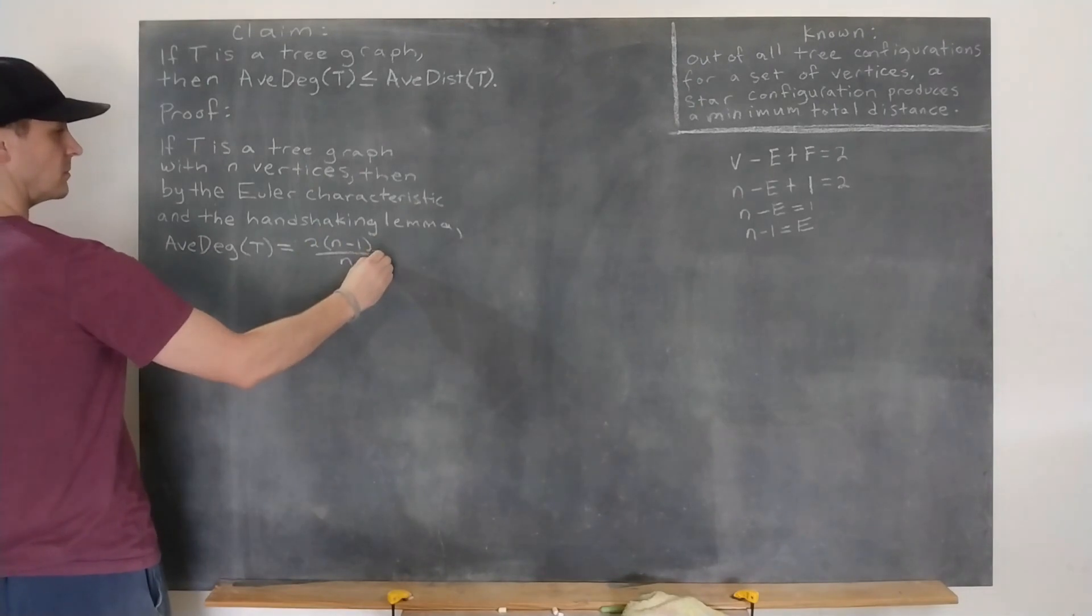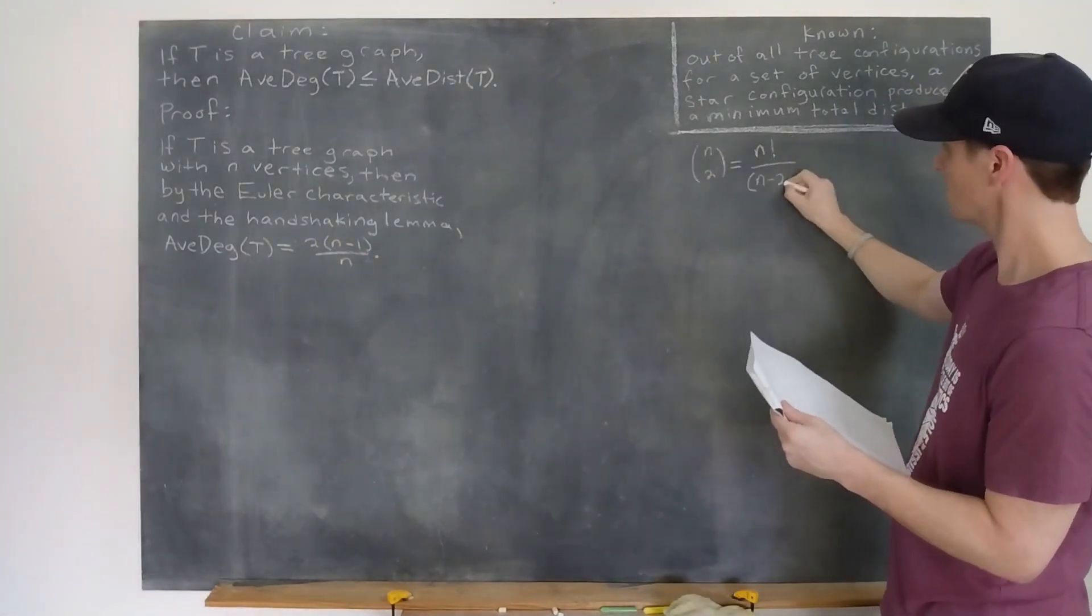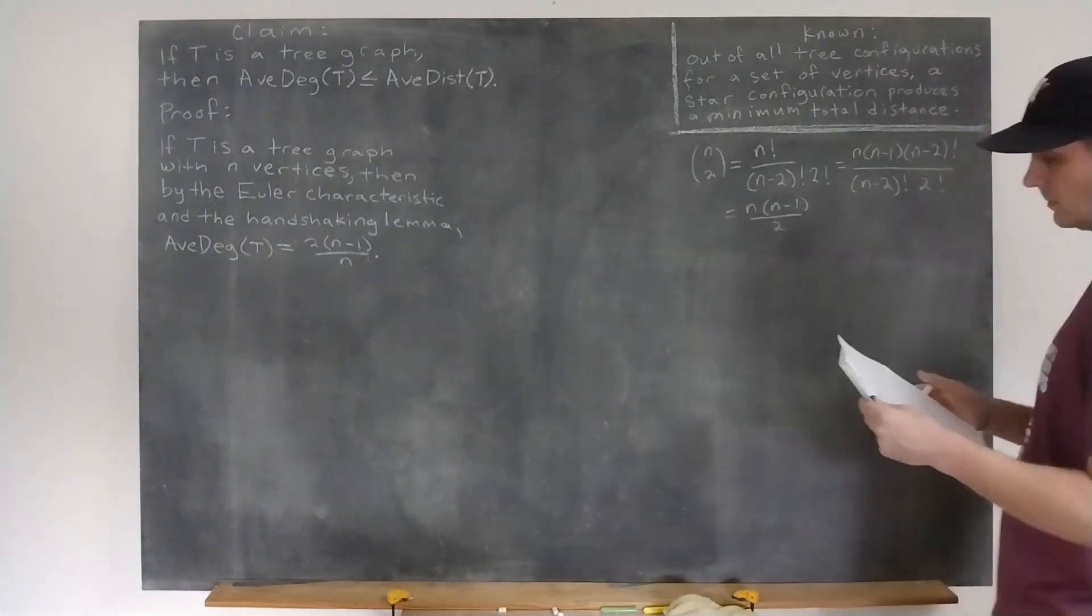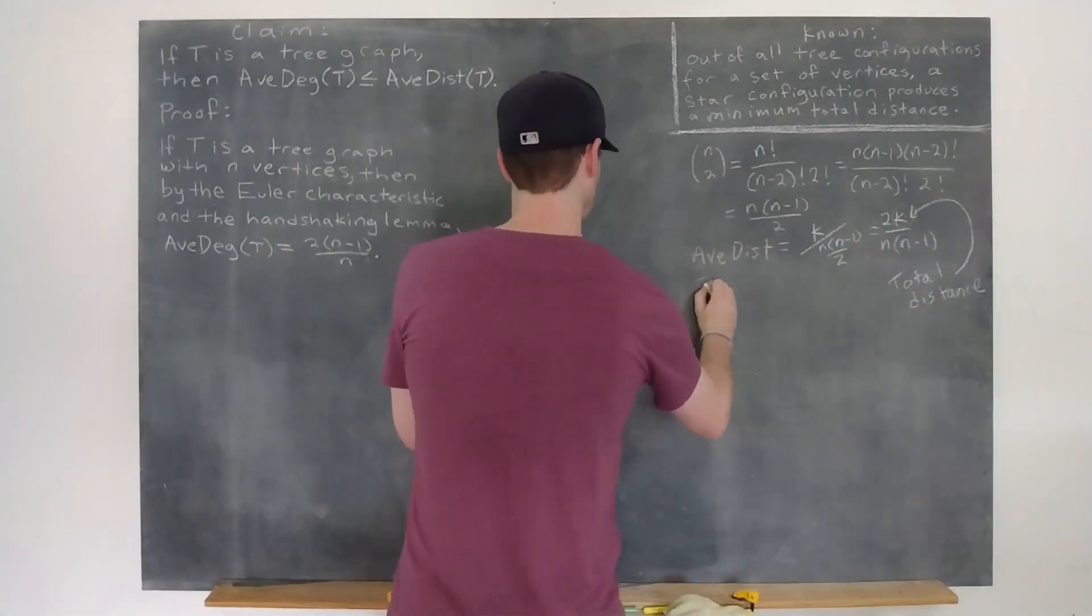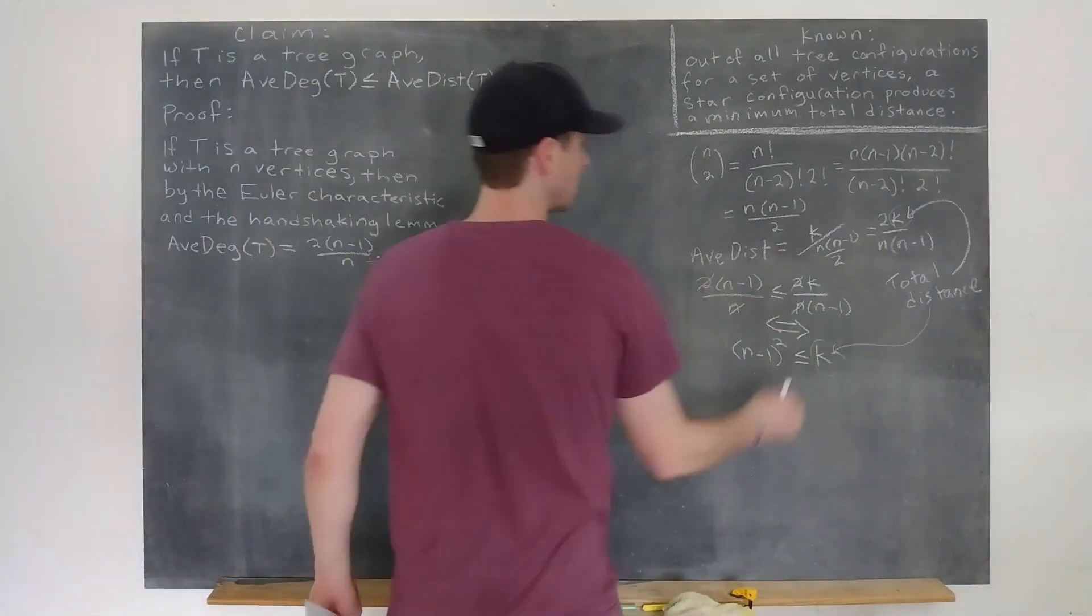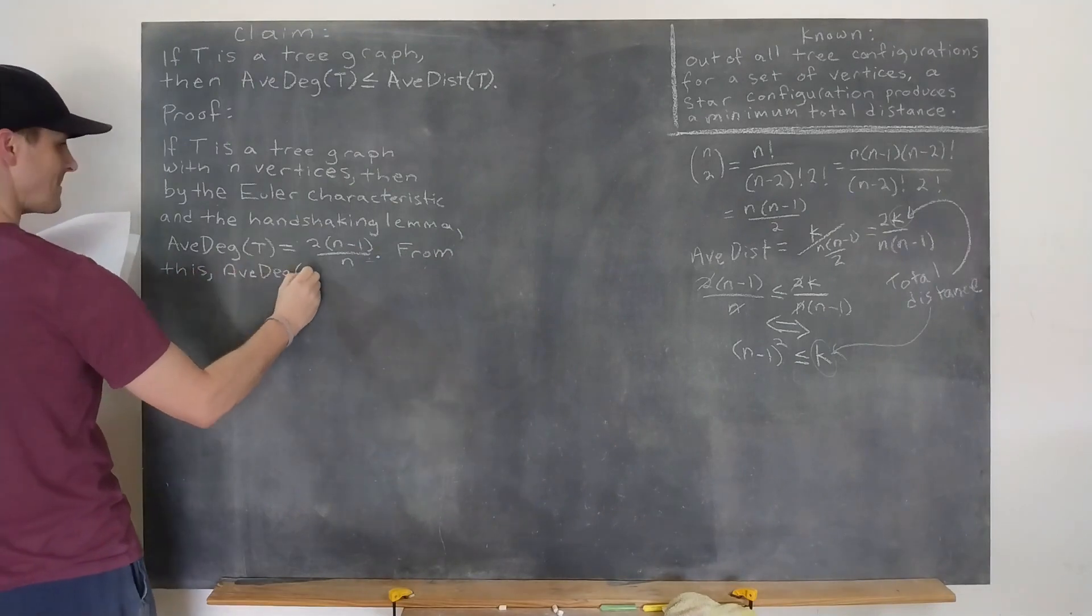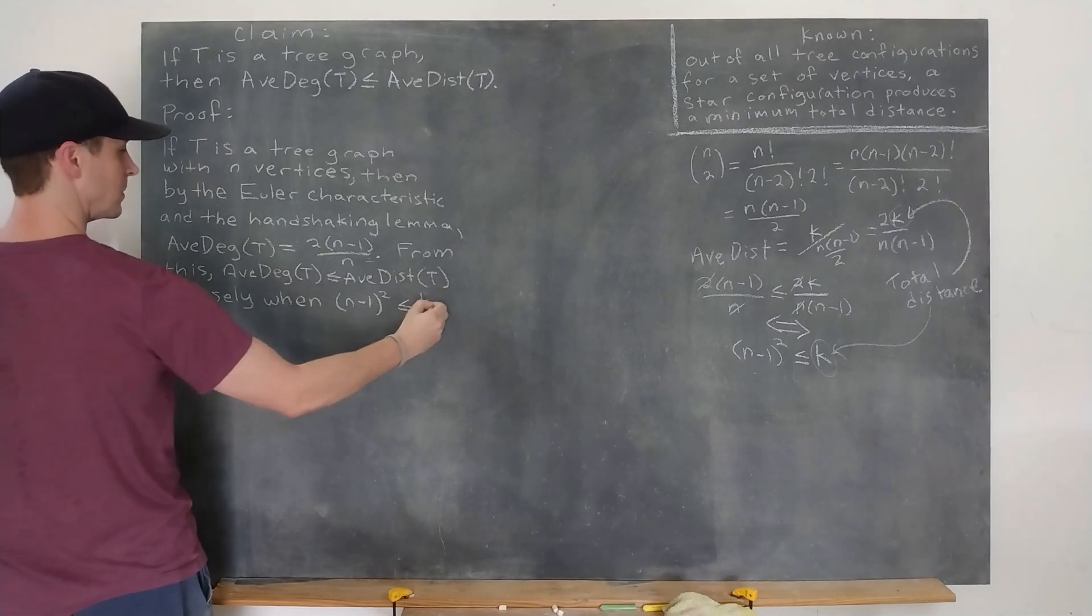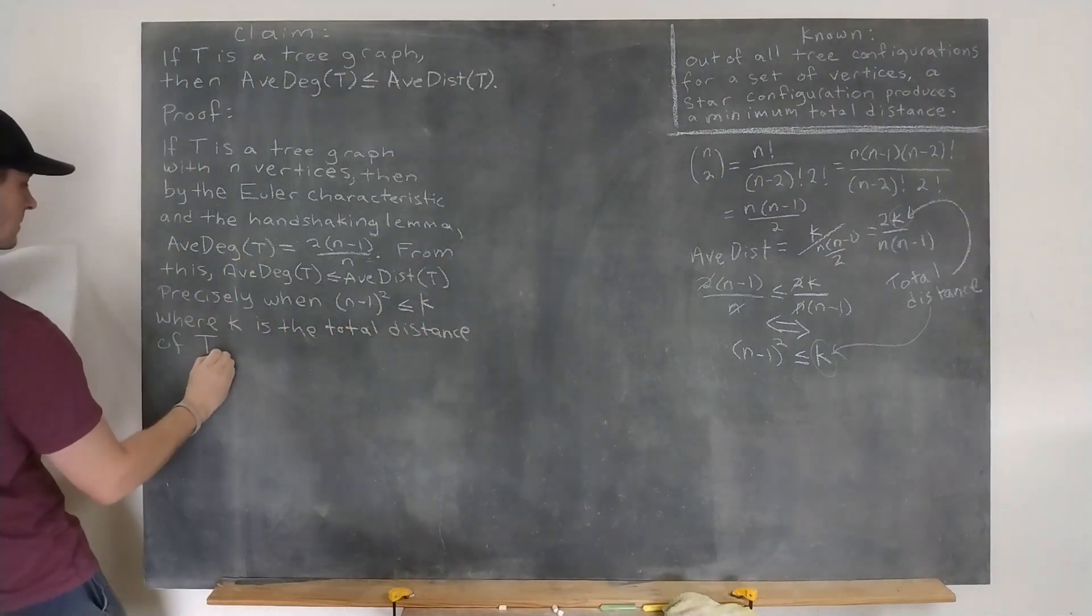Now looking at the average distance, there are n choose 2 pairs of vertices to consider. So if k is the total distance, the average distance is k divided by n choose 2. This simplifies things for us. The average degree of t is no more than the average distance of t if and only if the square of the quantity n-1 is less than or equal to this total distance k.